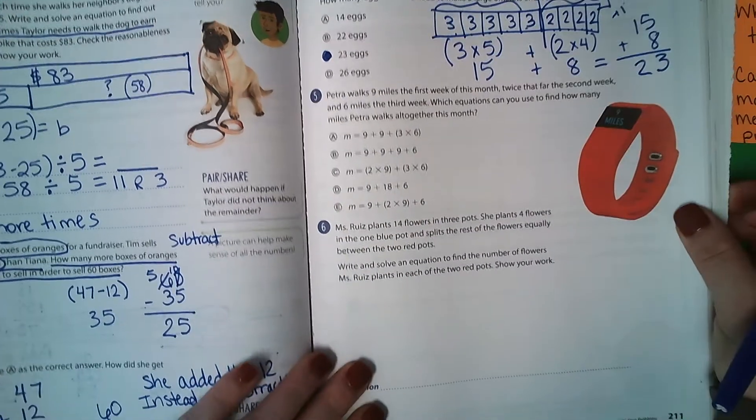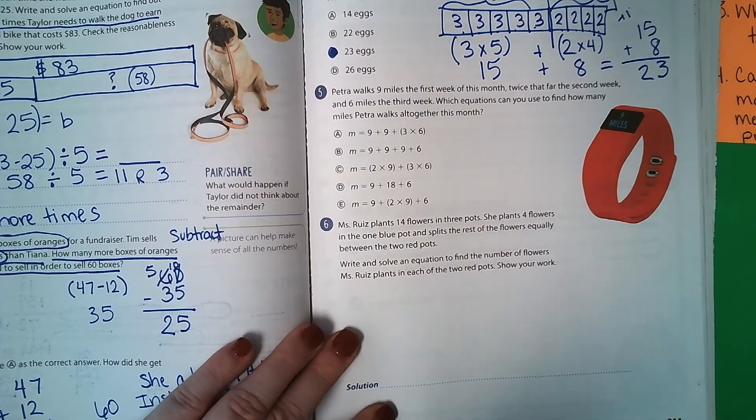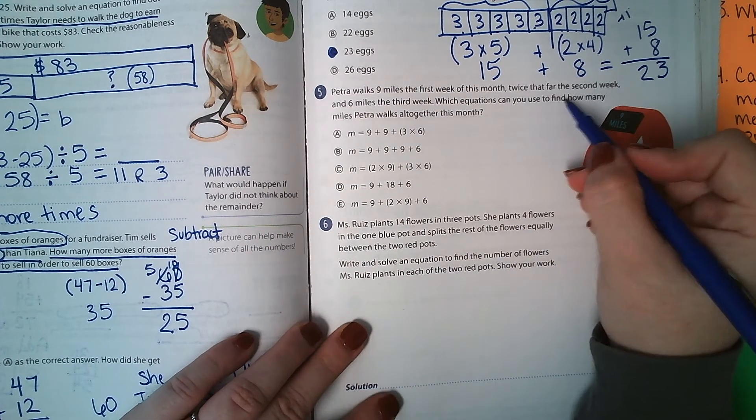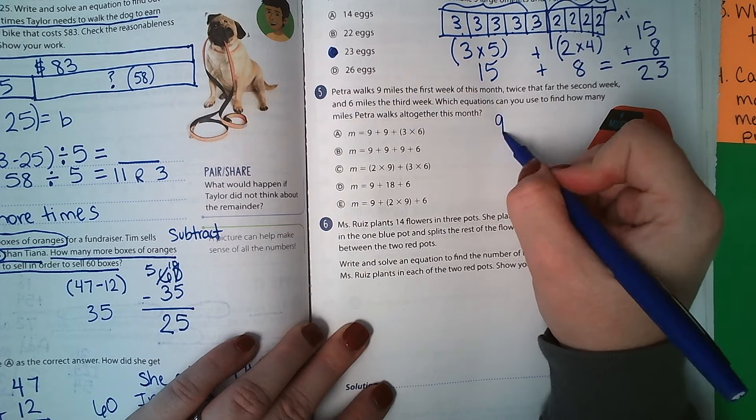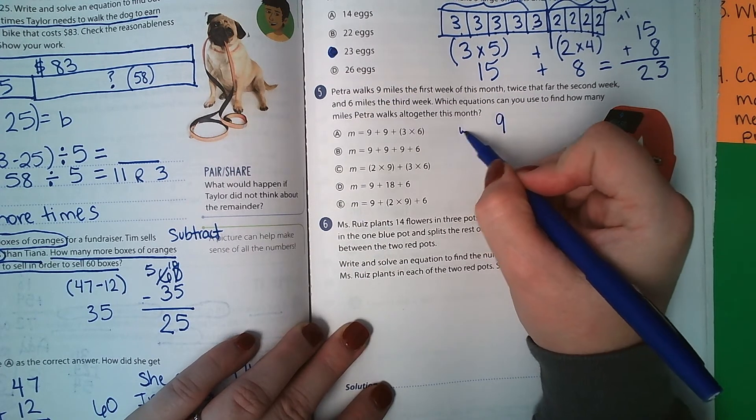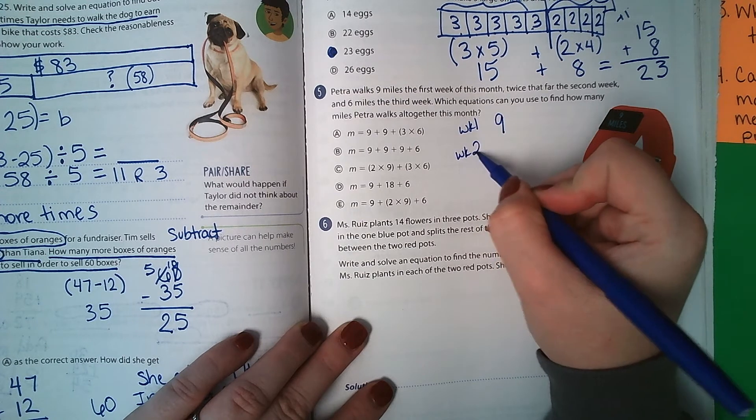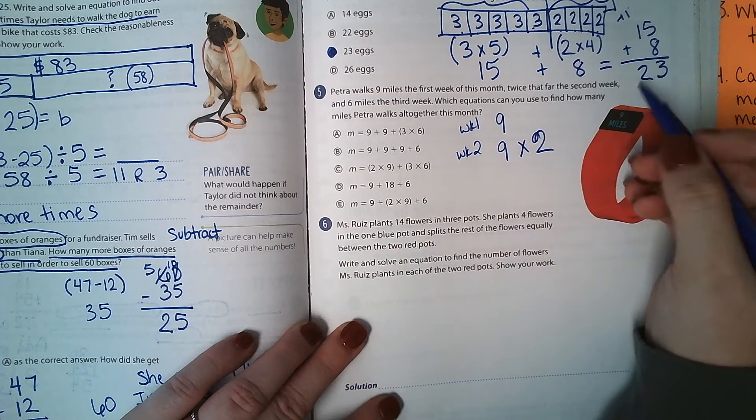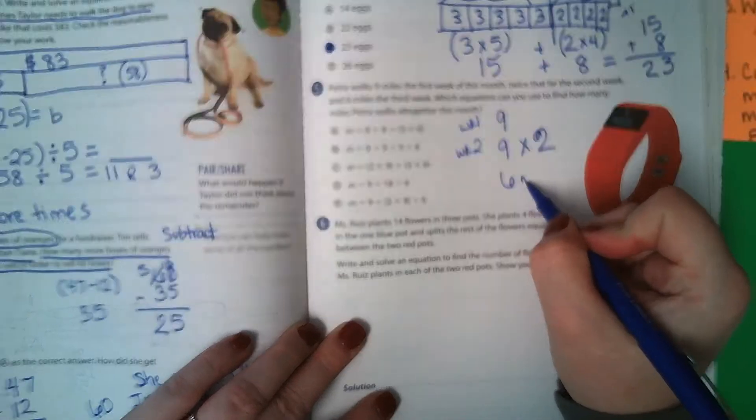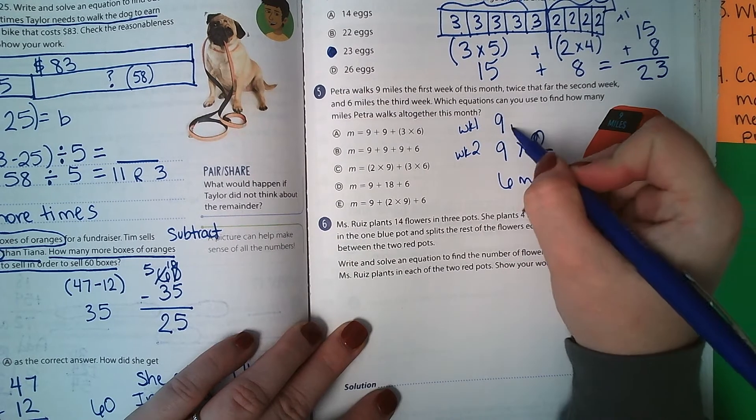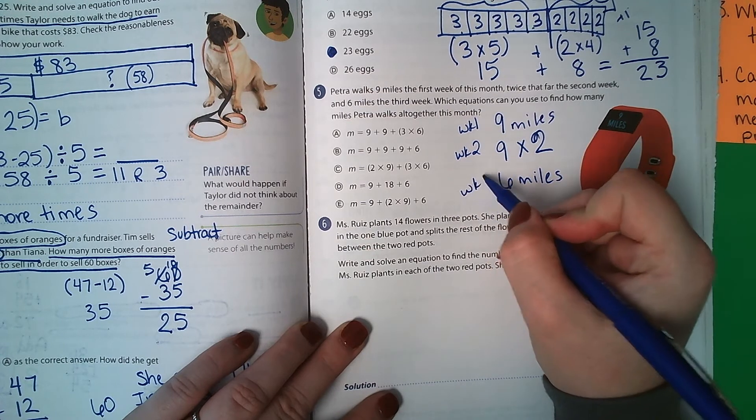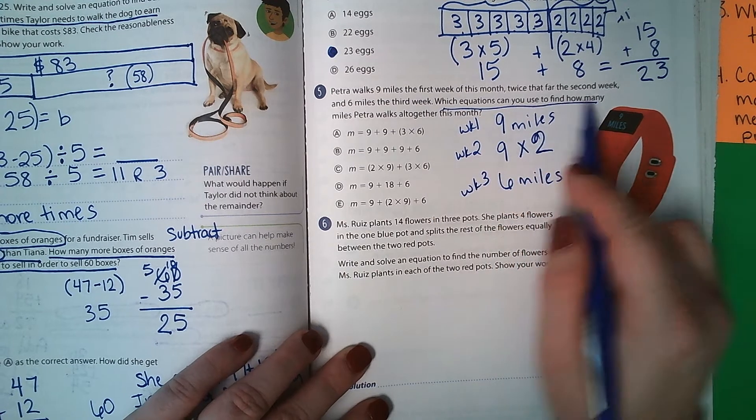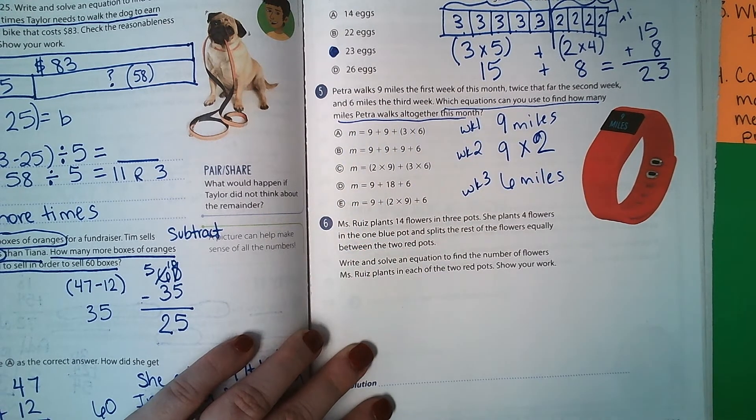Number 5, Petra walks 9 miles the first week of this month. Okay. Twice that far the second week. So 9, this is week 1. Week 2, she said twice that much. Which equations can you use to find how many miles Petra walks all together?